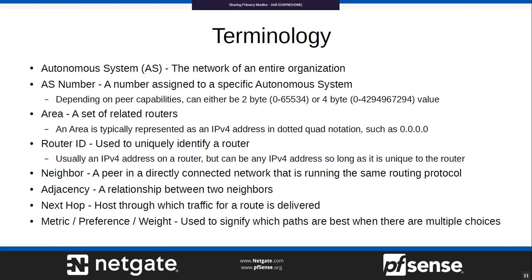Before getting too deep into BGP or OSPF, here are a few key terms. An autonomous system, or AS, is basically your organization's network — typically an entire company or at least an entire site. An AS number is just a number assigned to your autonomous system, most commonly seen in BGP. Depending on your peers' capabilities it can be a 2-byte AS (0 to 65,534) or a 4-byte AS number, which is a 32-bit unsigned number — a very large range.